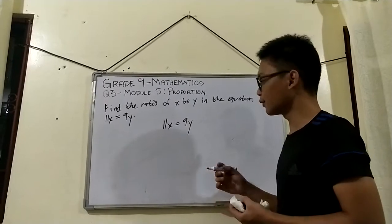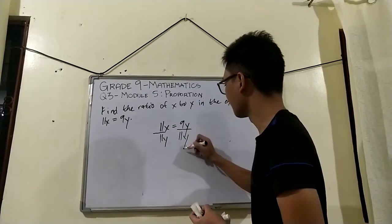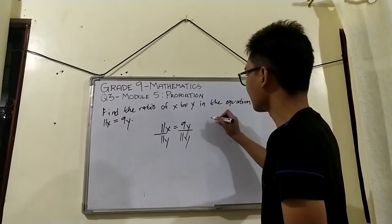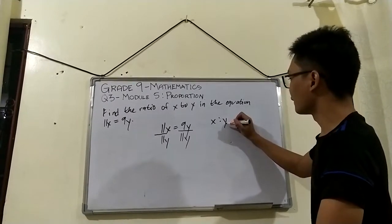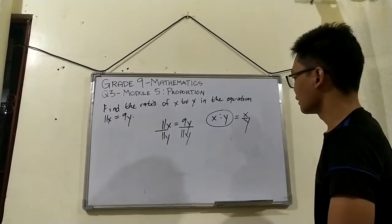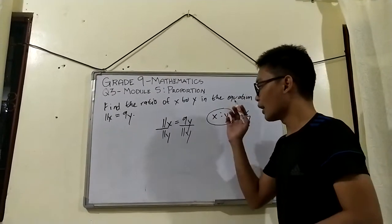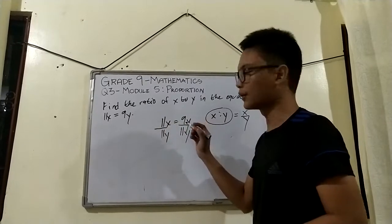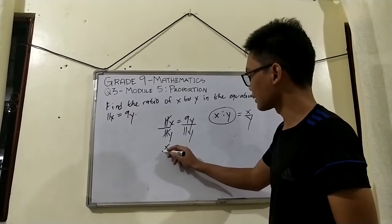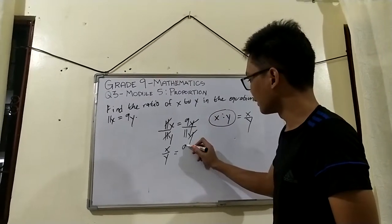Our second step will be dividing both sides by 11y. Why 11y? Because what we are finding is x to y, and the fractional form of this ratio is x over y. In order to get x is to y in this equation, we divide 11y to both sides. We can cancel 11 on the left-hand side and we now have x over y. On the right-hand side, we can cancel y and we will have 9 over 11.